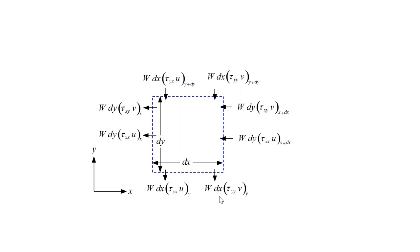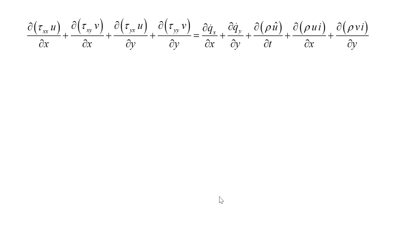You put them all into a big energy balance, and this is what you get after you do the normal thing of taking the limit as DX and DY go to zero and dividing through by DX, DY, and W. So you can see where all these different terms come from. You have some terms here that are related to work transfers, one, two, three, four, these are the four work transfers associated with those four shear stresses. These are the heat transfer terms in the two directions.